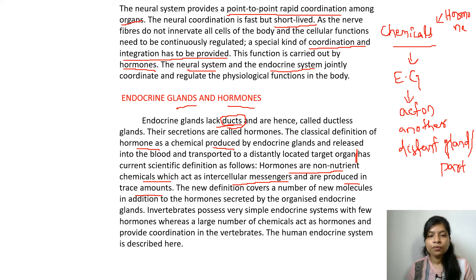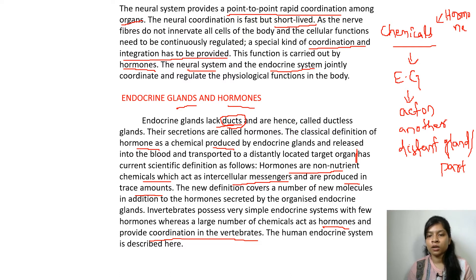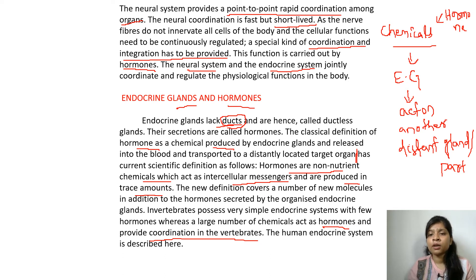Invertebrates, being simpler organisms, possess a very simple endocrine system with few hormones, whereas a large number of chemicals act as hormones and provide coordination in vertebrates. Vertebrates, having more specialized and complex characteristics, possess a correspondingly complex endocrine system.